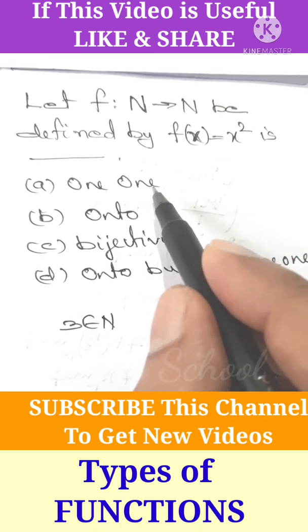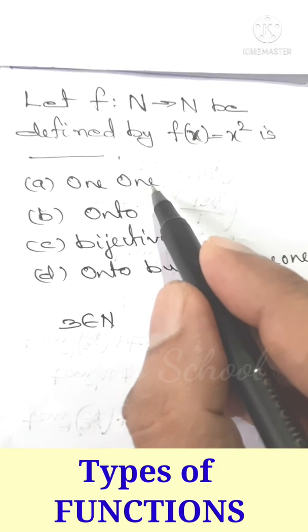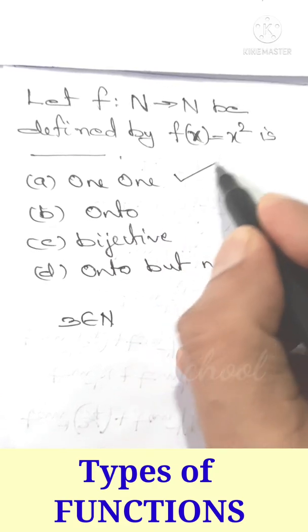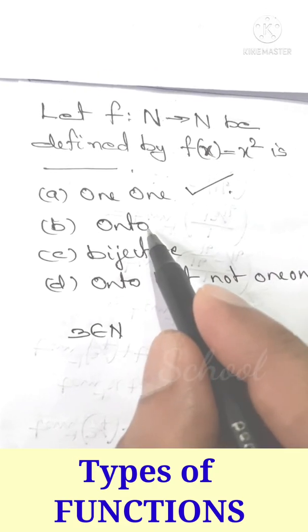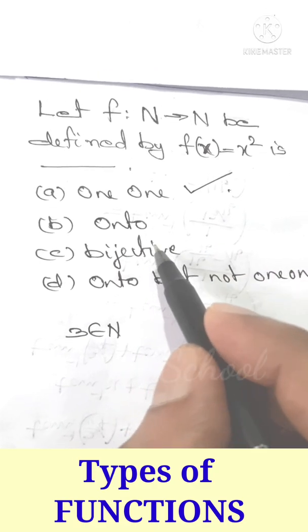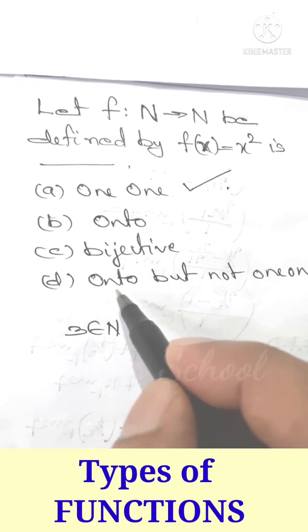The correct option is option A: the function is one-to-one only. If the function were onto, then every element in the codomain would need a preimage, but that is not the case here.